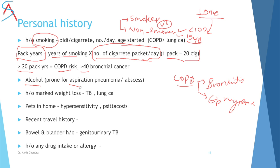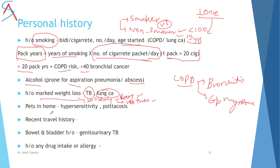Ask about alcohol history — alcoholism with loss of consciousness increases risk of aspiration pneumonia and lung abscess. Ask about marked weight loss; confirm by asking whether rings have become loose or clothing has become loose. Marked weight loss is seen in tuberculosis and lung malignancies. Ask about pets at home, as they can cause hypersensitivity. Ask about recent travel — the patient may have acquired an endemic respiratory disease. Bladder and bowel history is important if genitourinary tuberculosis is suspected. Ask about drug intake and allergies.